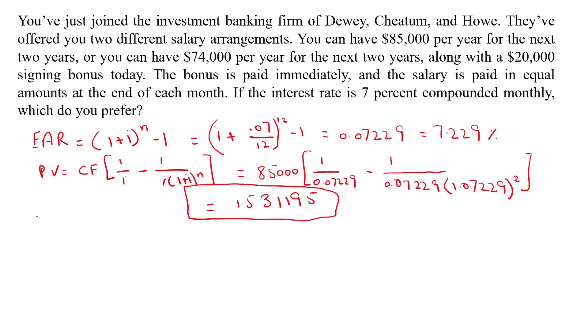Again, we will calculate the present value. Present value is equal to $74,000 × [1/0.07229 - 1/(0.07229 × 1.07229) raised to power 2].